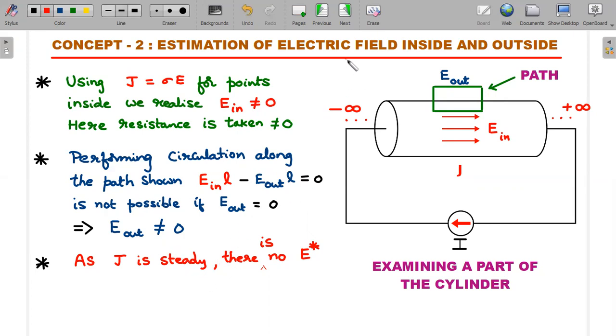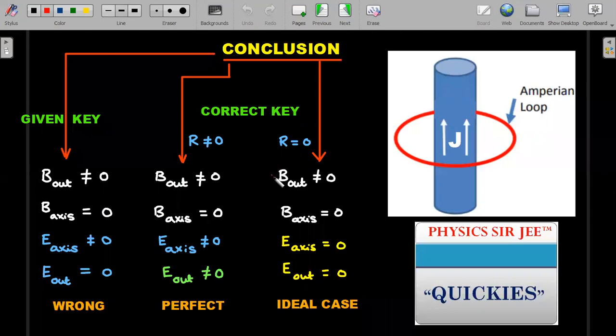So what was the given key and what is the corrected key? This is the conclusion we are making. The given key says that B_out is non-zero, it's fine. B at axis is zero, that's also fine. It's the debate about the electric field. A lot of students have this misconception that electric field only inside is non-zero and outside it is zero, which is wrong. So the corrected key, you have two more options. Some students argue that maybe he has taken the resistance of that conductor as zero, that we'll see that option also. Then also the key has to be changed. So if resistance was not equal to zero like in the previous page, then your B_out and B_axis match with the given key, but the E_axis and E_out simultaneously have to be non-zero.